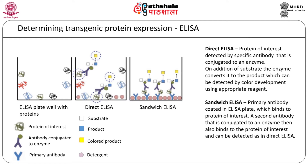The expression of proteins coded for by the transgene depends on various internal factors like mRNA structure, codon usage by host plants, and protein structure unfolding, as well as on external factors like host plant features, tissues where the gene is expressed, and temporal and spatial regulation of protein expression. Hence it is important to ensure that the transgene product is present in the transgenic plants.